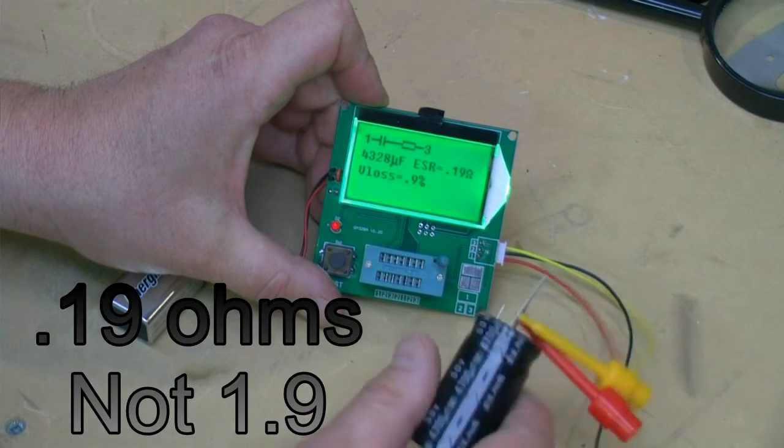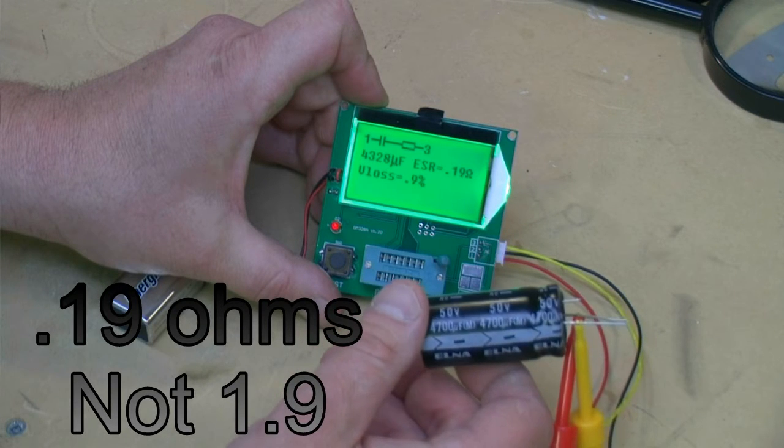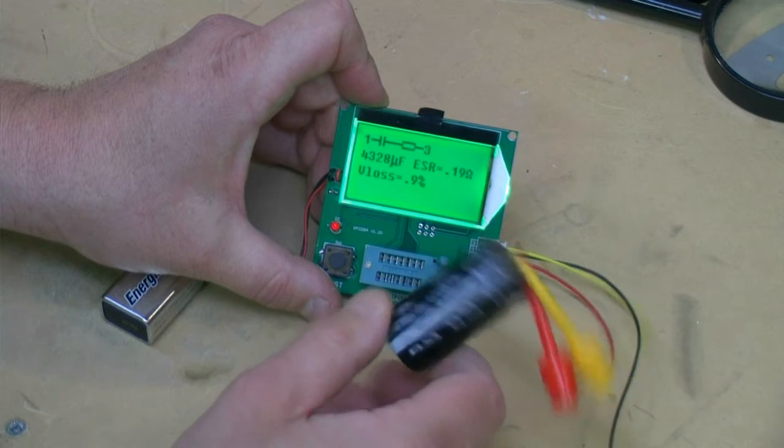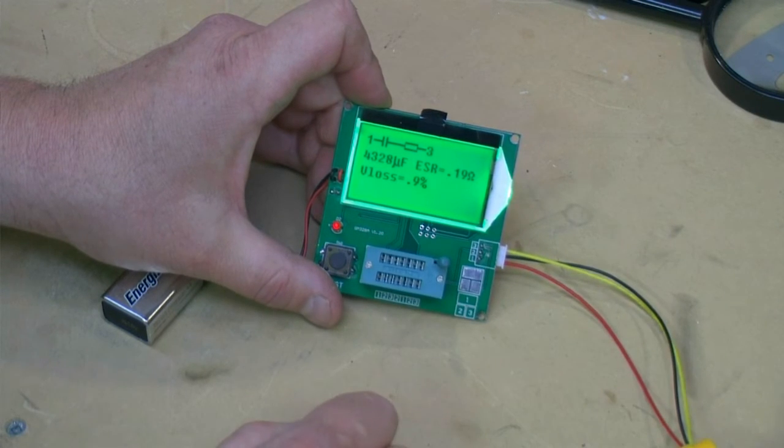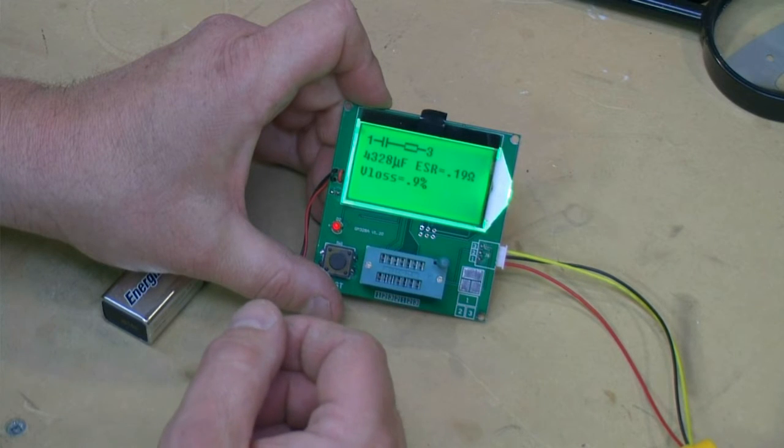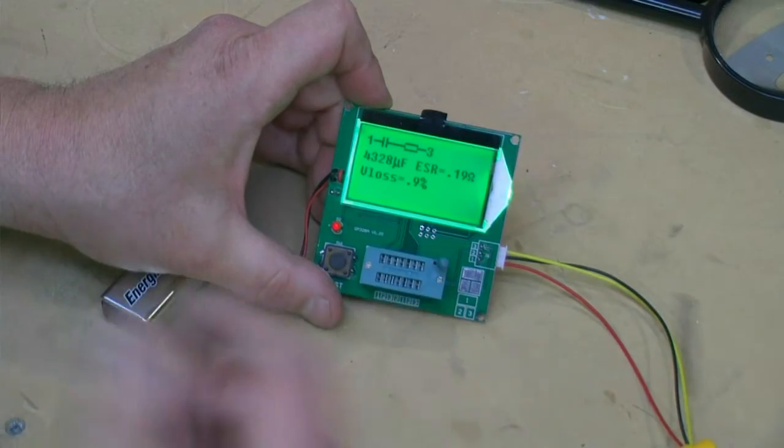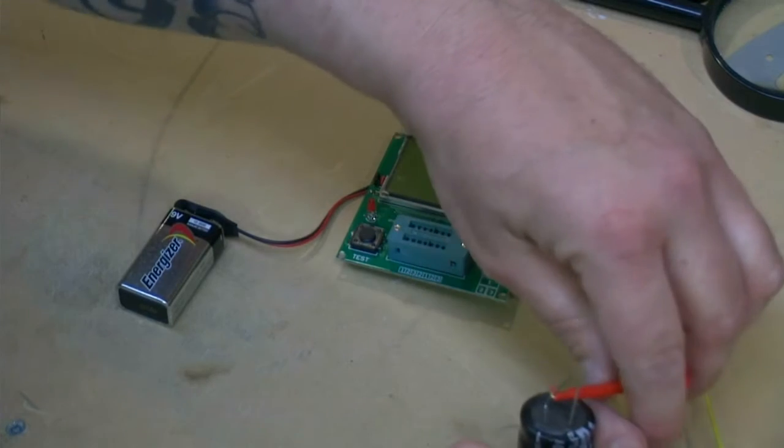A leakage of 0.9% or something. That's pretty good. I'm pretty happy with that. That's just a quick way to test caps and resistors, diodes, transistors. This thing does a lot of stuff. It's pretty damn cool actually.